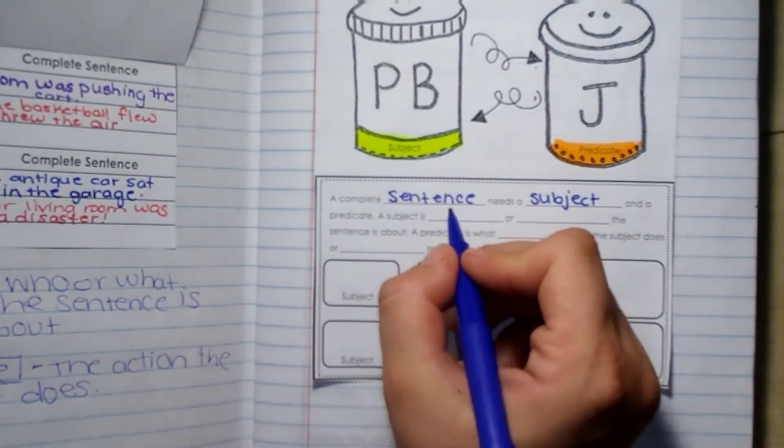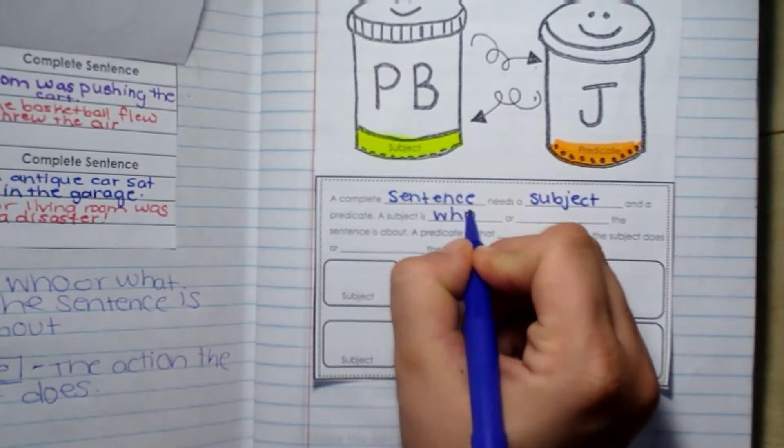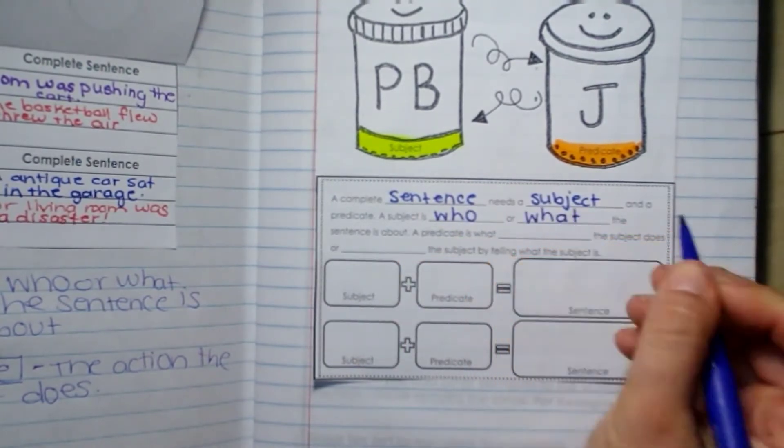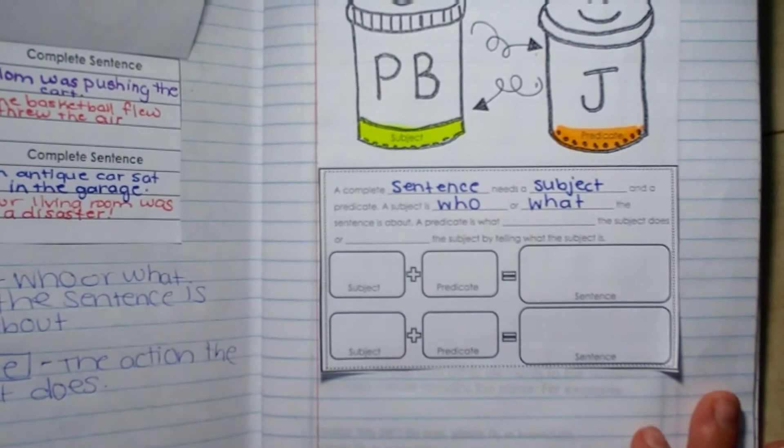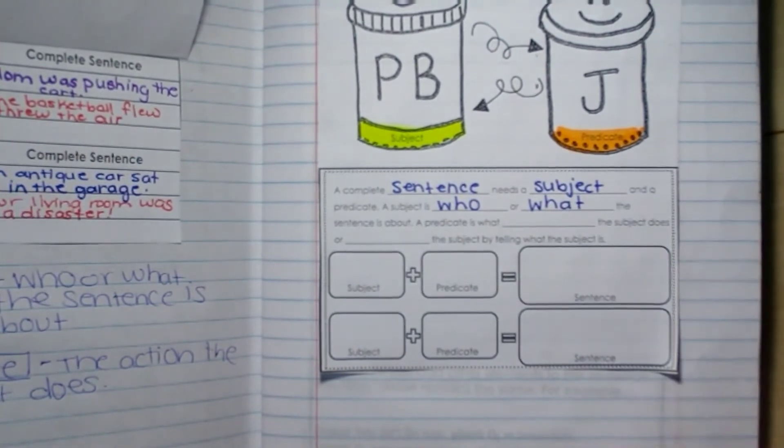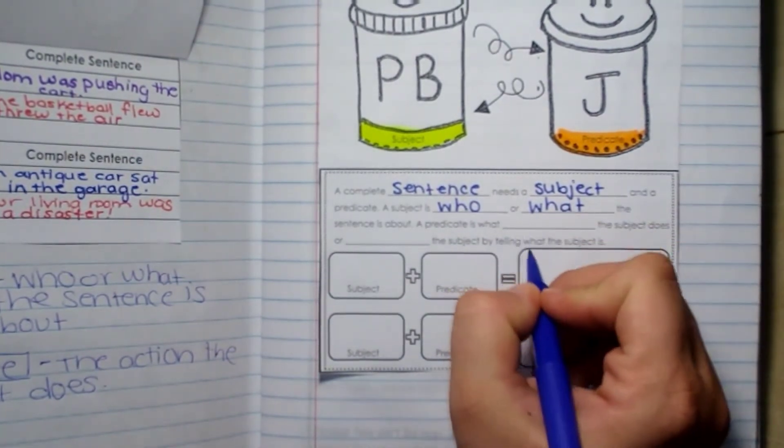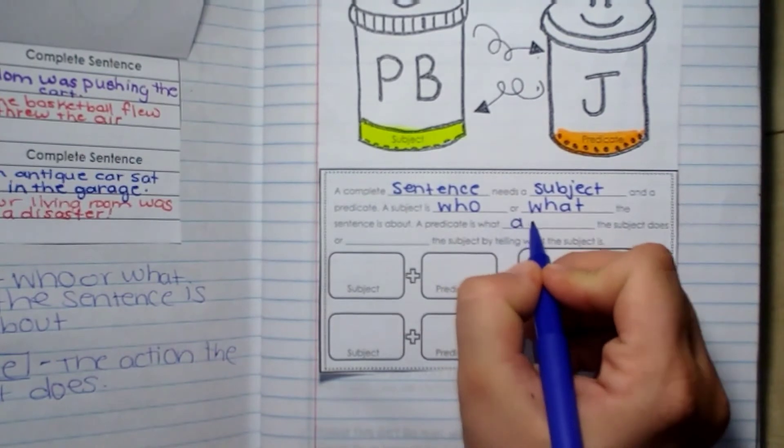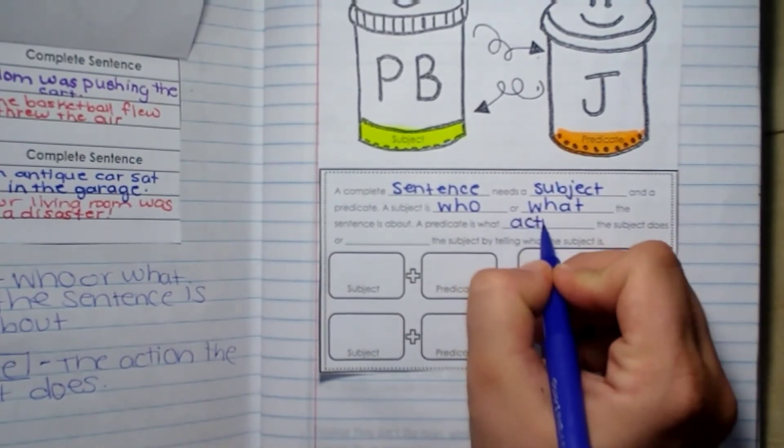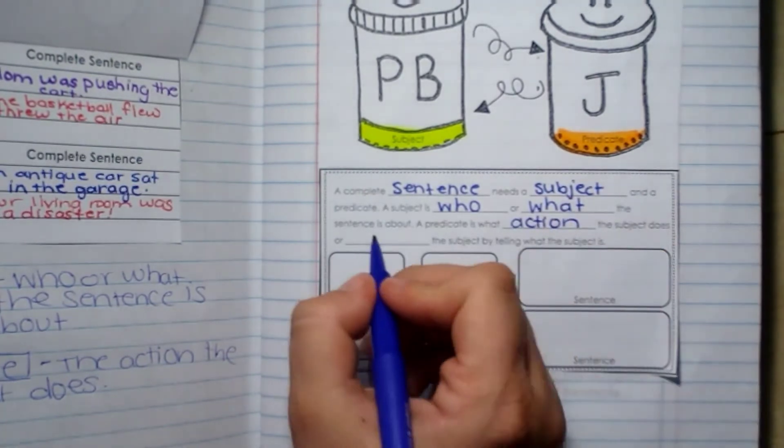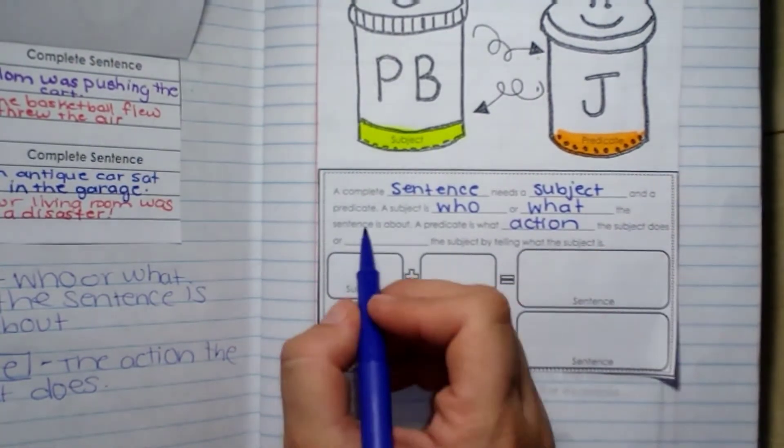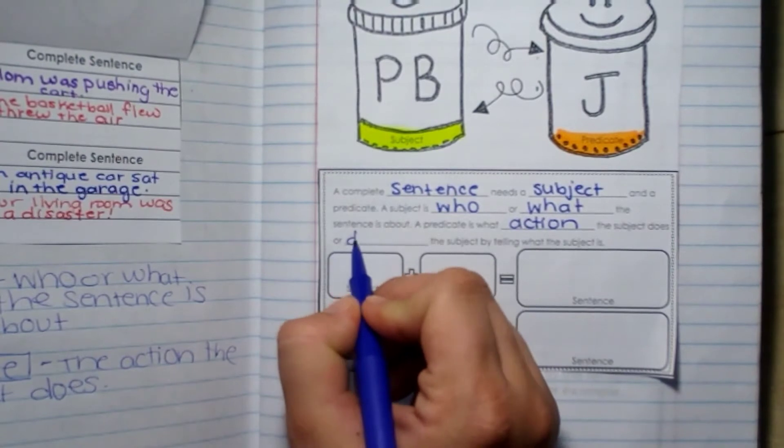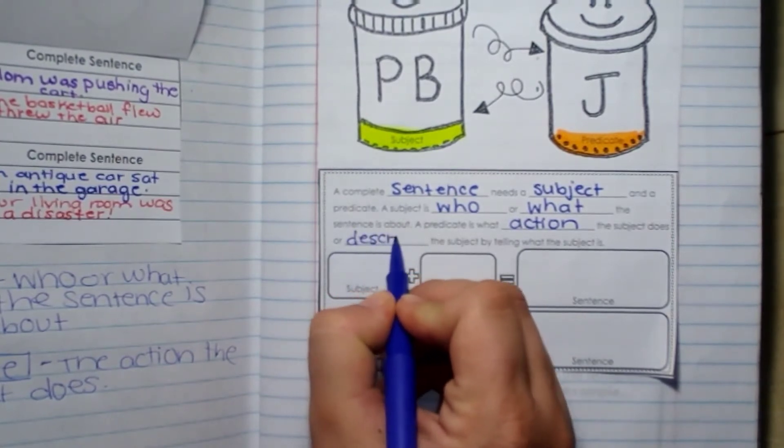A subject is who or what the sentence is about. A predicate is what action the subject does, or describes the subject by telling what the subject is.